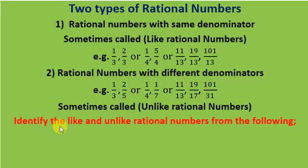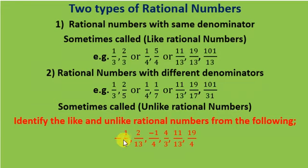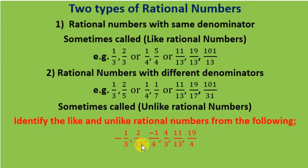Here is an assignment for you: identify the like and unlike rational numbers from the following — minus 1 by 3, 2 by 13, minus 1 by 4, 4 by 3, 11 by 13, and 19 by 4. For example, I am helping you identify one pair: minus 1 by 3 and 4 by 3. In both cases, the denominator is 3, so this pair of rational numbers is a like pair of rational numbers.